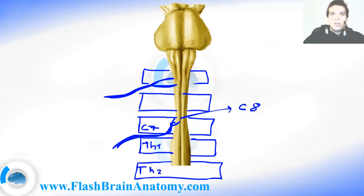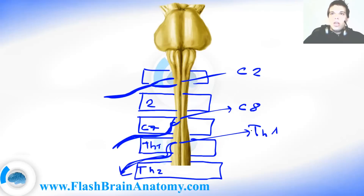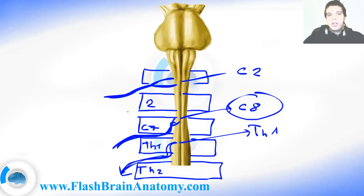Then comes TH2, and the spinal nerve that leaves between TH1 and TH2 belongs to segment TH1. So for cervical segments the nerve leaves above its corresponding vertebra, while for thoracic segments the nerve leaves below. This naming convention changes around the C8 segment, which I've illustrated here.